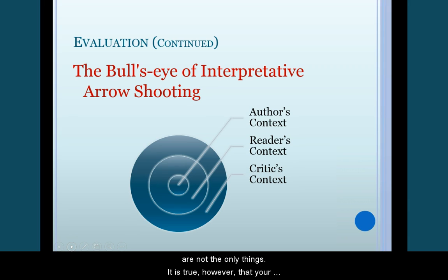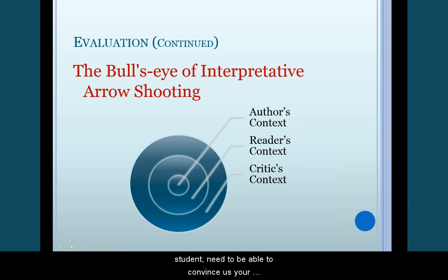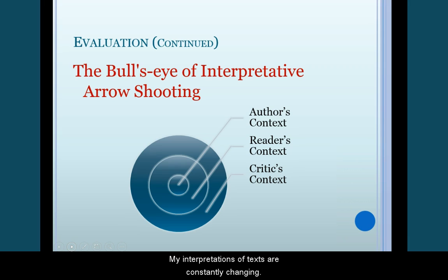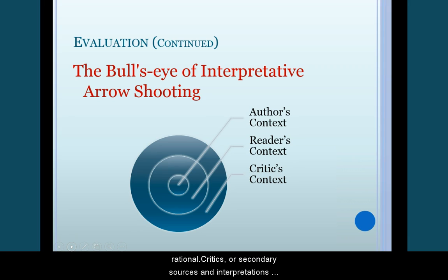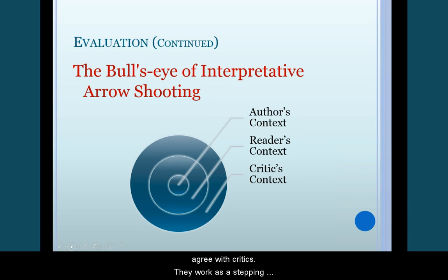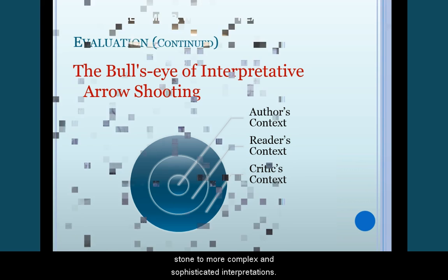It is true, however, that your interpretation of the story should rationally make sense to other readers, and, of course, your teacher — and you, the student, need to be able to convince us your interpretation is valid. There is no shame in changing your initial interpretation of a text. My interpretations of texts are constantly changing. Remember, your interpretation is still important, but it needs to be rational, and sometimes initial emotional reactions are not rational. Critics, or secondary sources and interpretations, work to help add alternate interpretations and illuminate subtle connections to the text you cannot make on your own. You do not have to completely agree with critics — they work as a stepping stone to more complex and sophisticated interpretations.